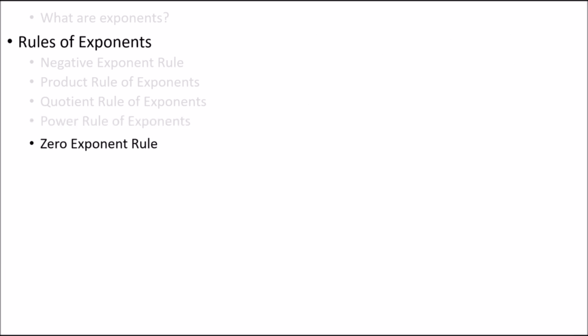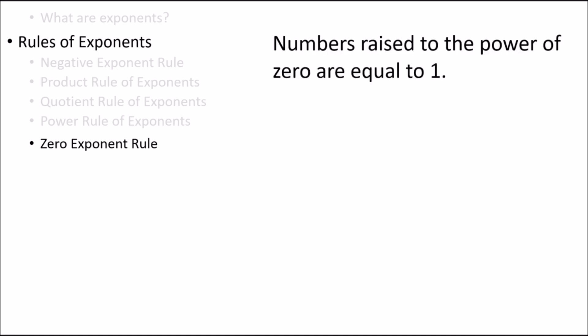Finally, we have the zero exponent rule. It gives us a way to simplify exponents that are raised to the power 0. The zero exponent rule tells us that any number raised to the power 0 is 1. For example, x raised to the power 0 is also equal to 1. Seems like a simple enough rule. However, there is one exception.